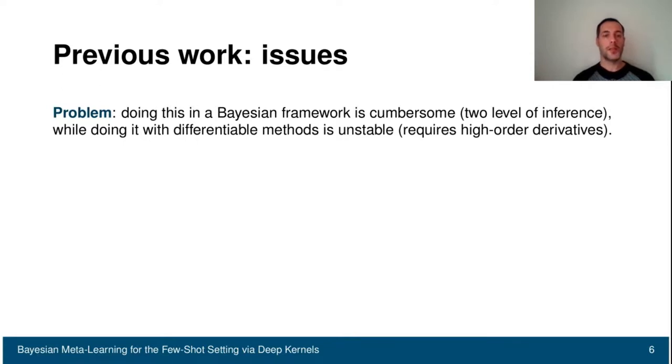Now the problem with Bayesian hierarchical methods is that it's cumbersome to manage the two level of inferences. We have to impose a prior on both the top and the bottom level of the hierarchy, and doing this in a differentiable way with differentiable methods like MAML is also quite difficult because it's unstable. We have to estimate high order derivatives and back propagate from the inner to the outer loop.